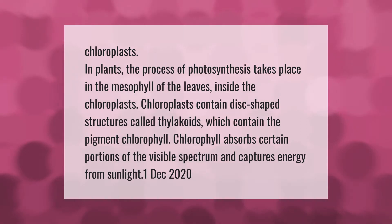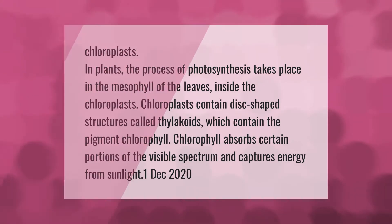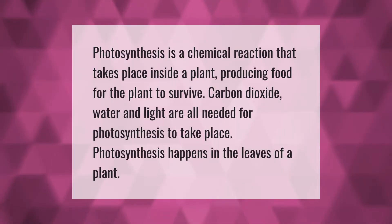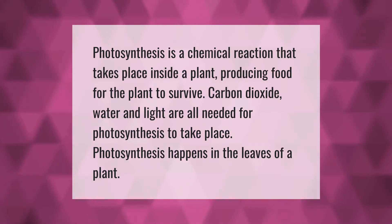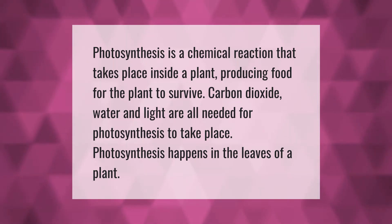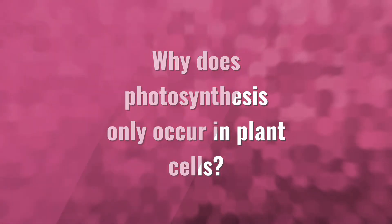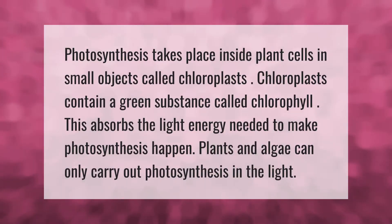Photosynthesis is a chemical reaction that takes place inside a plant, producing food for the plant to survive. Carbon dioxide, water, and light are all needed for photosynthesis to take place. Photosynthesis happens in the leaves of a plant.